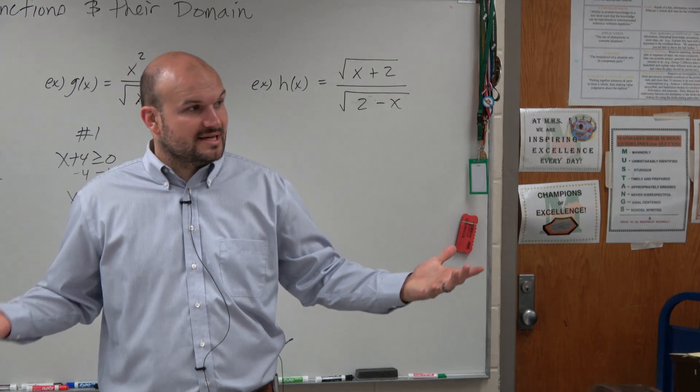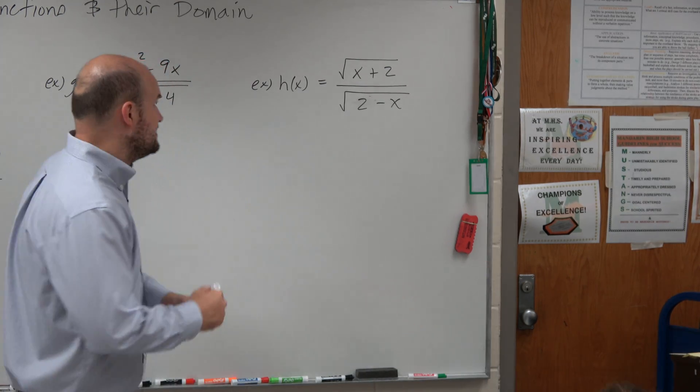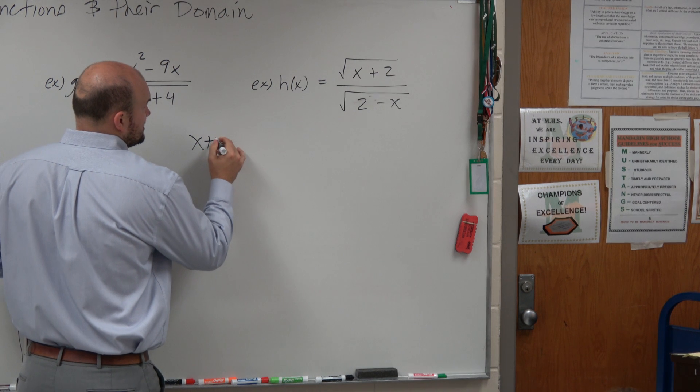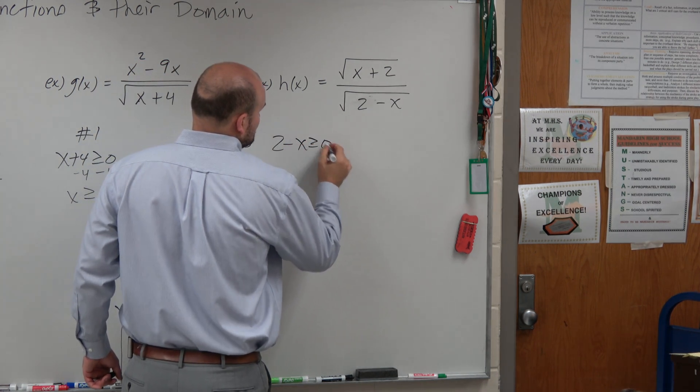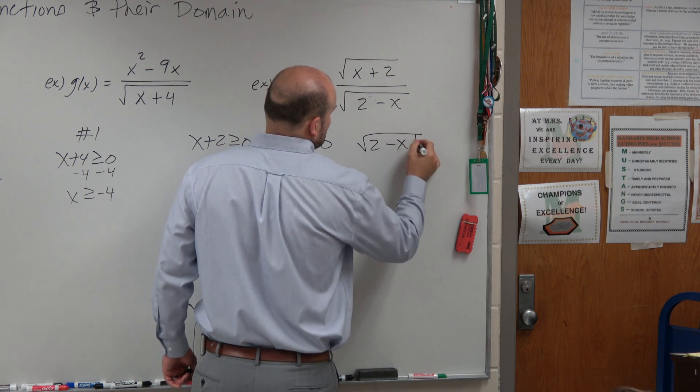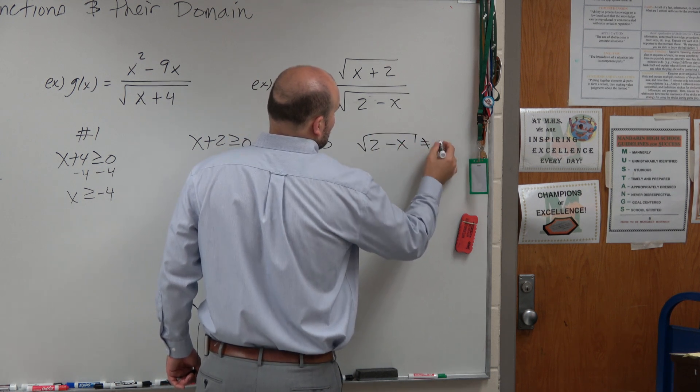We got to take into consideration any radical that we see. Any radical that we see, x plus 2 has to be greater than or equal to 0, 2 minus x has to be greater than or equal to 0, and then square root of 2 minus x cannot equal 0.